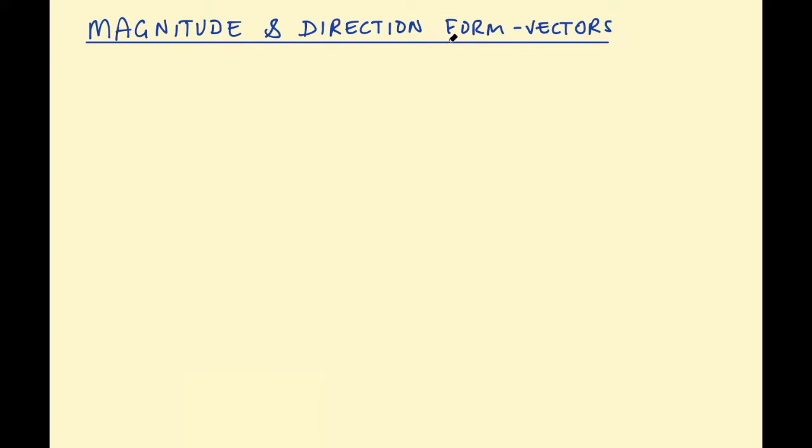In this video we're going to look at magnitude and direction form in relation to vectors. This video is part of an ongoing series for AS level mathematics, the first year of A level mathematics.